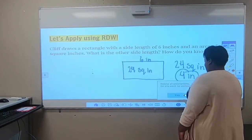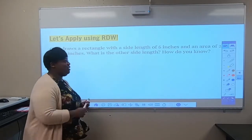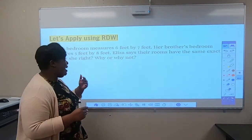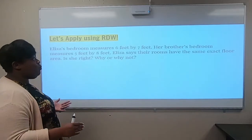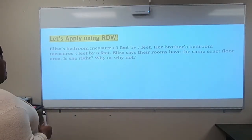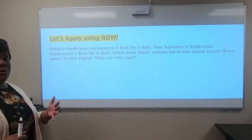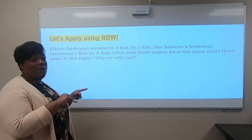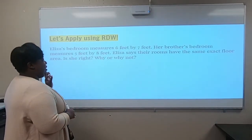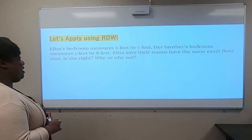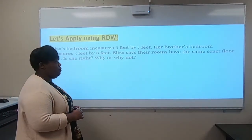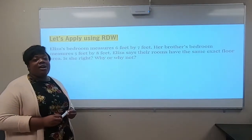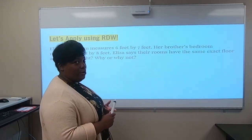Let's go to our second and last problem. I know word problems can be challenging, but I encourage my students to take them step by step — sentence by sentence. This is my favorite kind: a two-step word problem, which means we have to find an unknown before we get our final answer. Eliza's bedroom measures six feet by seven feet. Her brother's bedroom measures five feet by eight feet. Eliza says their rooms have the same exact floor area. Is she right? Why or why not? We're comparing the size of Eliza's room to her brother's room.